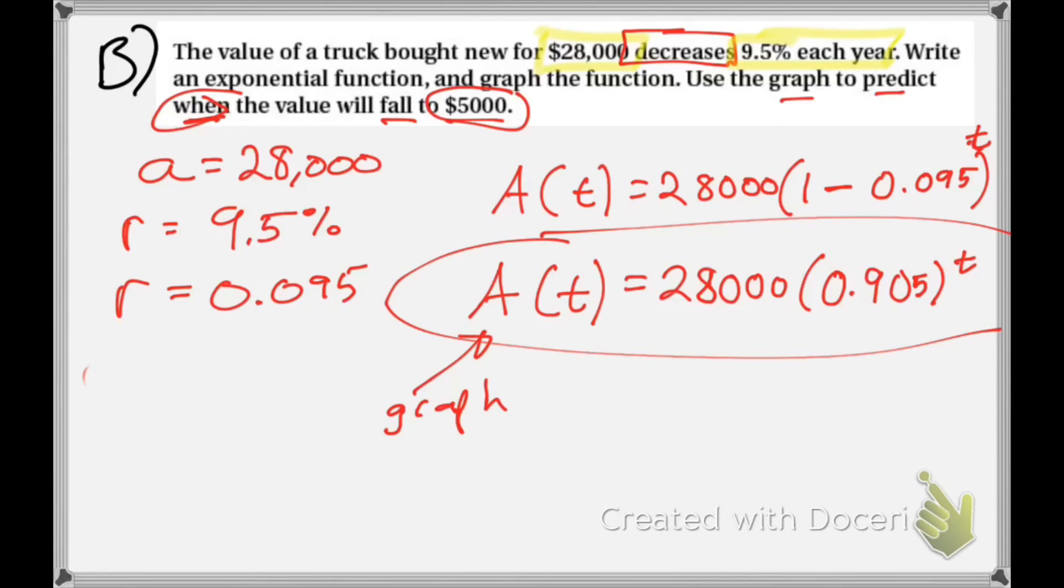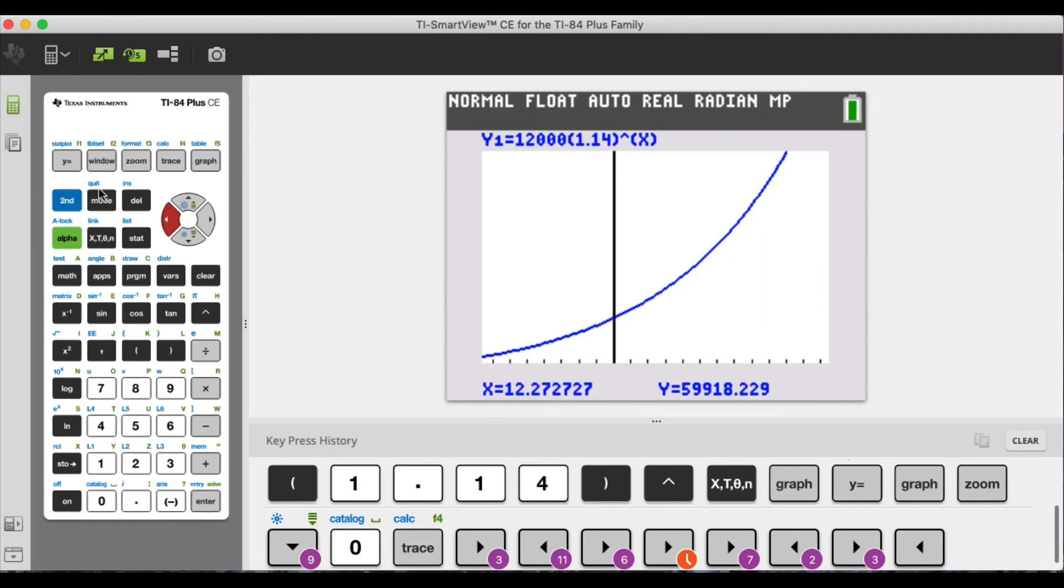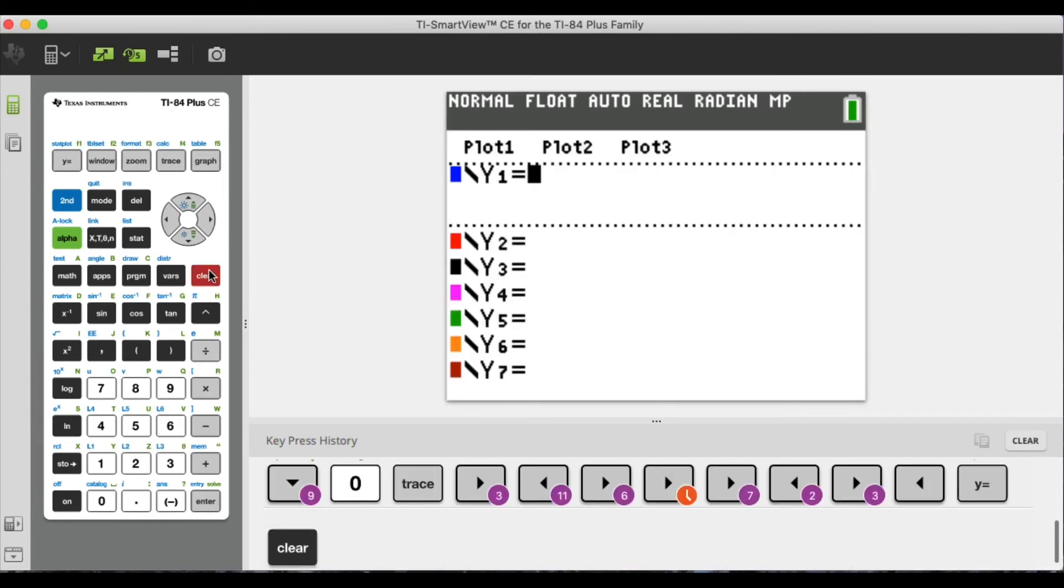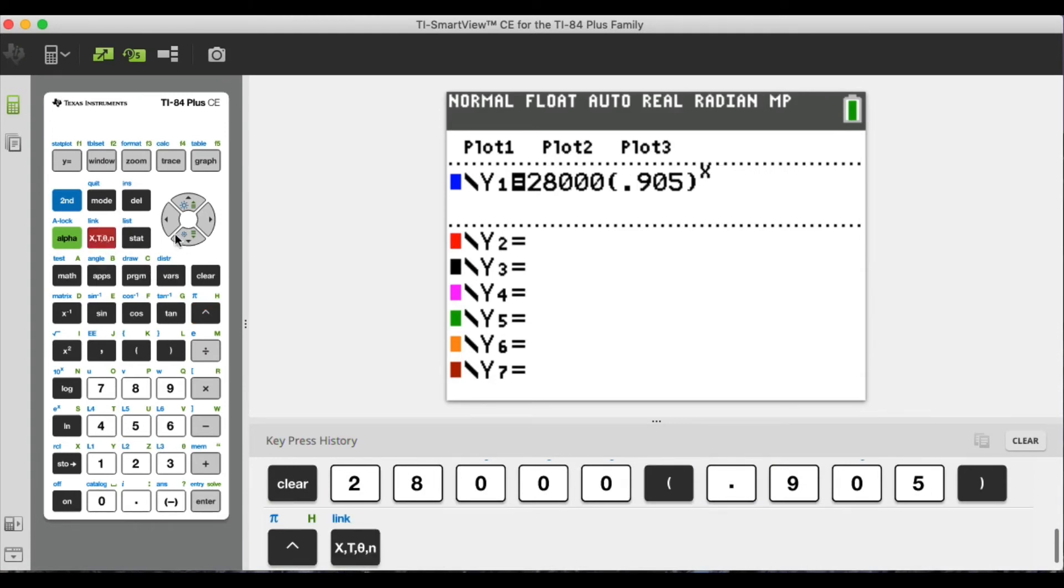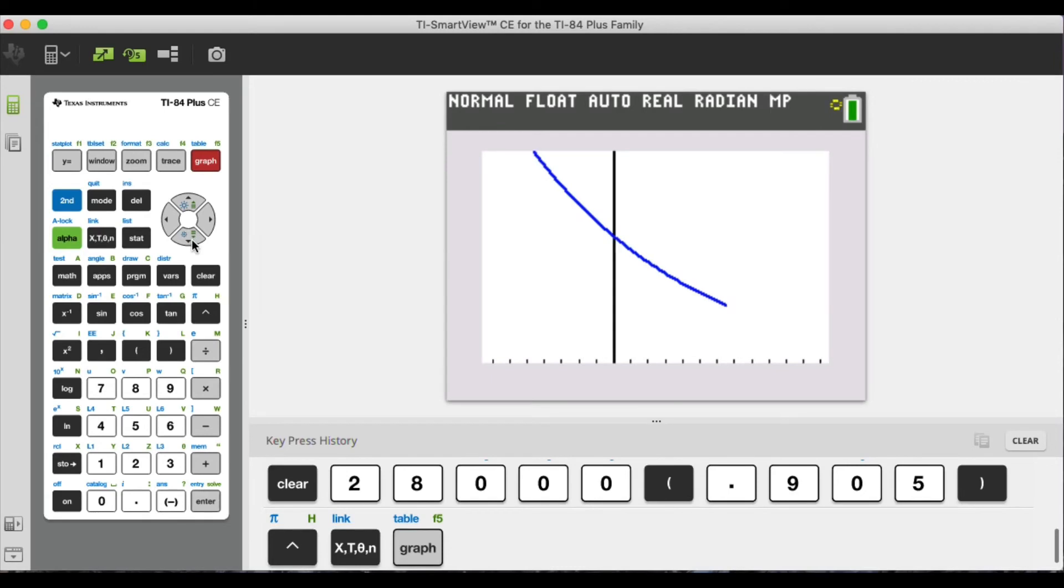Our next equation we have, let me get to it. So I'm going to clear everything out. I have 28,000 parenthesis 0.905, close parenthesis, raise to the x, which is really t. I graph it. There's my equation. I'm going to hit trace to get the x y coordinates on the graph. Now I'm looking for the value to fall, and notice that it's decay here because the graph is decreasing as time increases. So decreasing value. I'm looking for $5,000. So I'm at 13, 12, 8, 7.